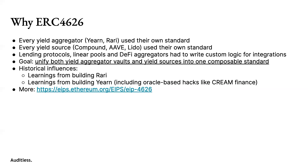The goal is to unify both yield aggregator vaults and yield sources into one composable standard. This standard really came from the collaboration between Fei and Rari, and then the Yearn team got involved and helped contribute their learnings from building vaults. It's had a great group of people working on crafting it. You can check out the EIP and there's a nice forum thread where people are hashing out the details. The motivation was basically that the Rari team started to look at integrating different lending protocols into their vaults.